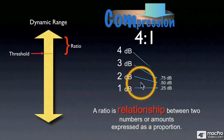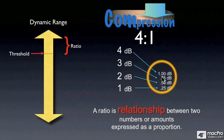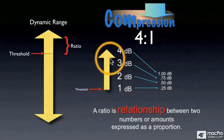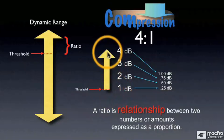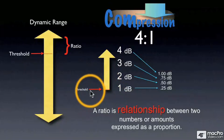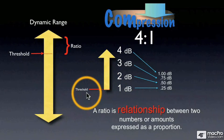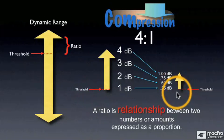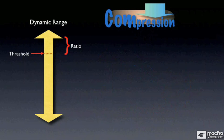And four dB above the threshold becomes one dB. So our sound on one side had a range from one to four dB. But because of where our threshold was set and the ratio, the range has been compressed to three quarters of a dB. That is how compression works.